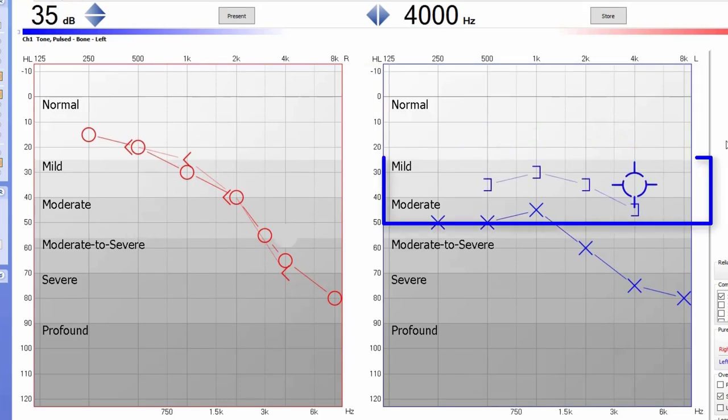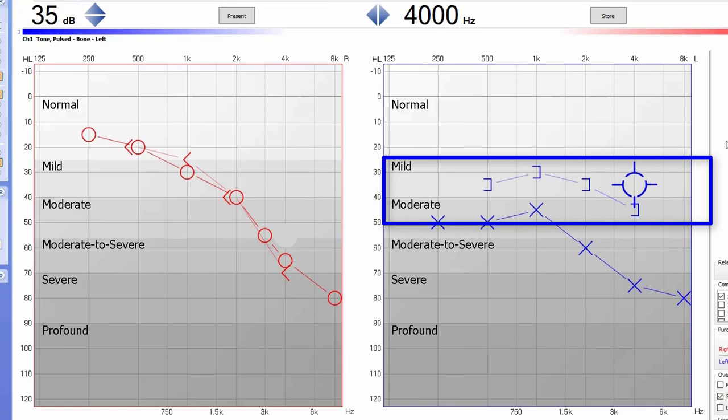If these brackets are in the mild range or worse, but there is still a significant gap between them and the X's or O's, then you have a mixed hearing loss. This is the combination between a sensorineural hearing loss and a conductive hearing loss at the same time.